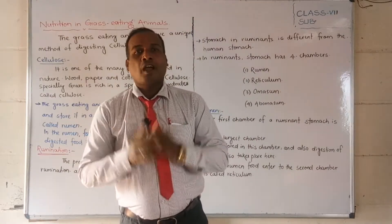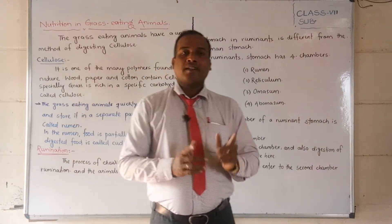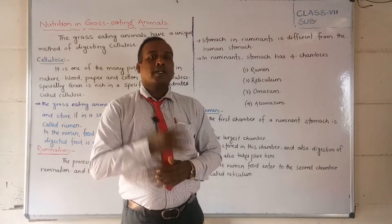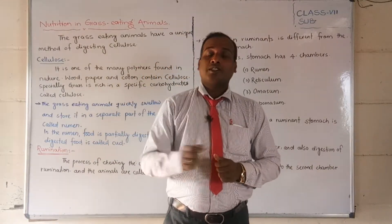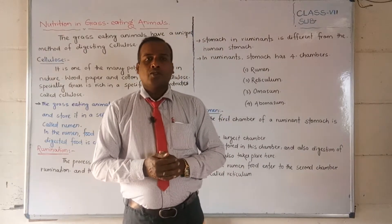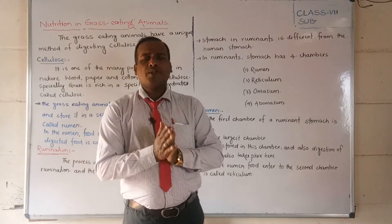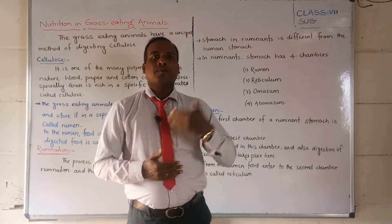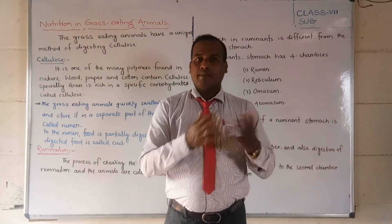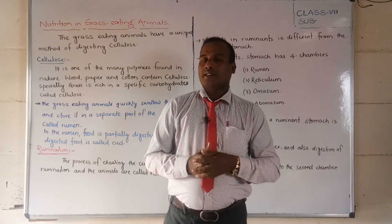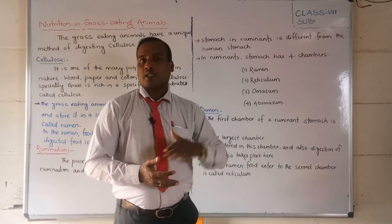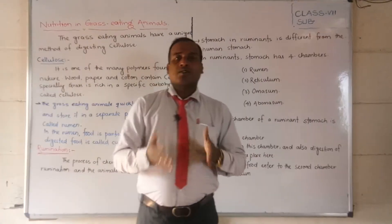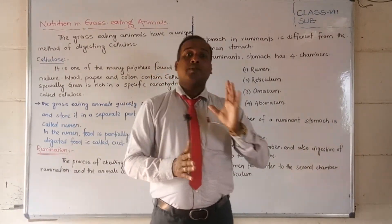Hello students, good morning and welcome back to our online class, Science 7th standard. Today we are going to continue our second chapter, that is Nutrition in Animals. In the previous video, we already discussed nutrition in humans — the seven organs of the alimentary canal, how food is digested, how it is utilized through assimilation, and how it is ejected.